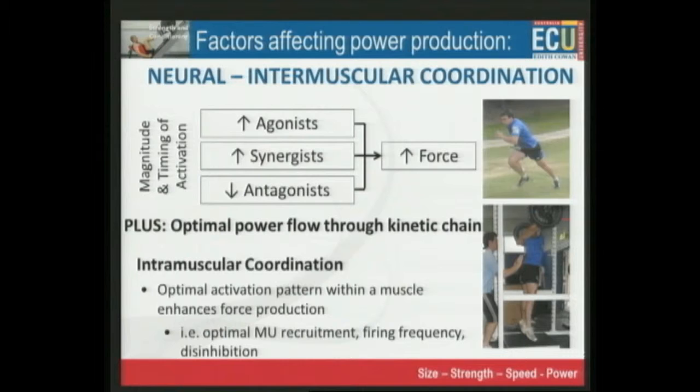When we produce a powerful movement such as a vertical jump or putting the shot, the brain doesn't just switch the muscles on. It coordinates it very precisely. Even within a single muscle, the way in which the brain switches the different motor units on and off is highly coordinated to produce the best performance.